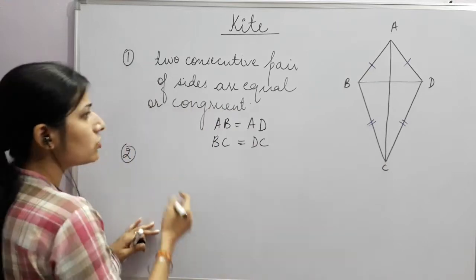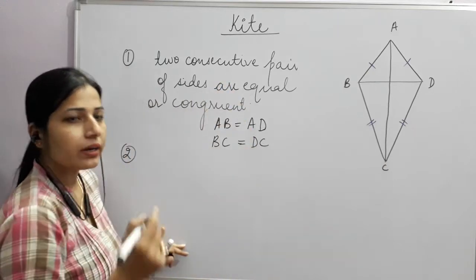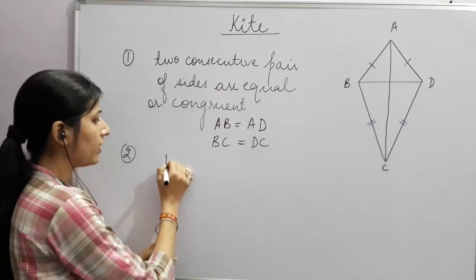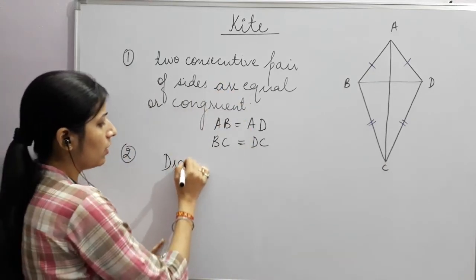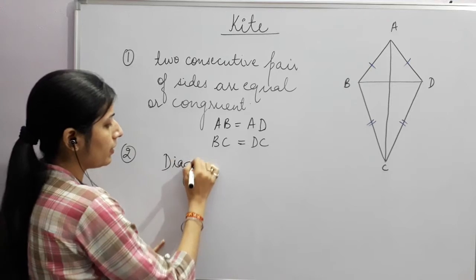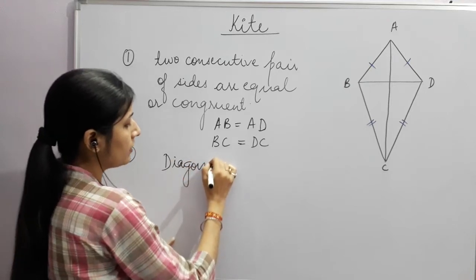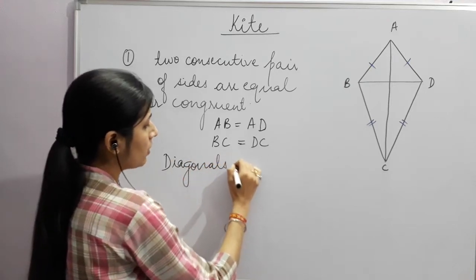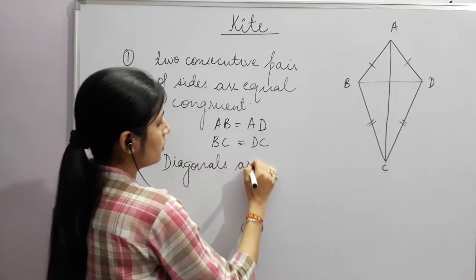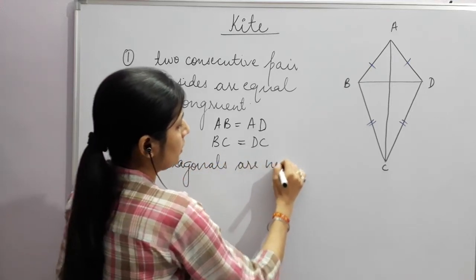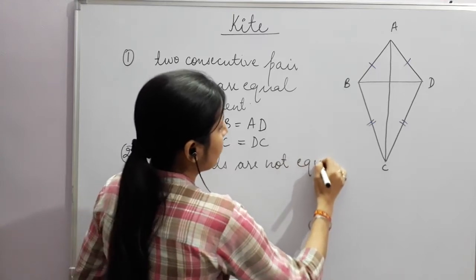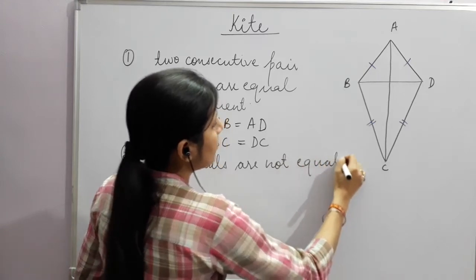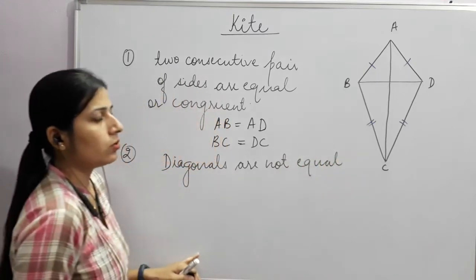The diagonals of a kite are not equal. This is clearly visible from the figure. The diagonals of a kite are never equal.